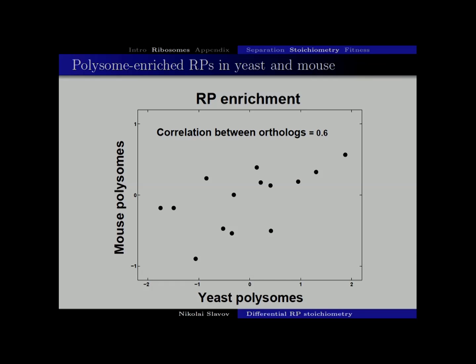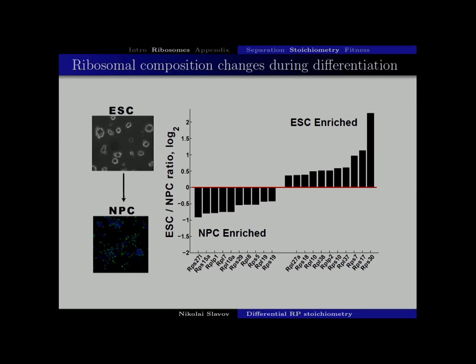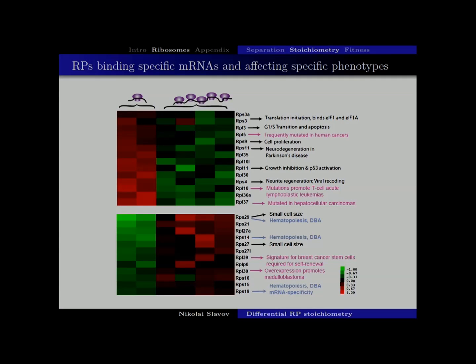How about the comparison of polysomal enrichment of ribosomal proteins between yeast and mouse embryonic stem cells? I wanted to see if those changes might be conserved. Generally I see a weak correlation, which is suggestive of conservation. These changes can also be seen between different cell types — here I'm showing a comparison of the ribosomal composition of ribosomes from mouse embryonic stem cells and neuroprogenitor cells. So this is about composition, but how about function?